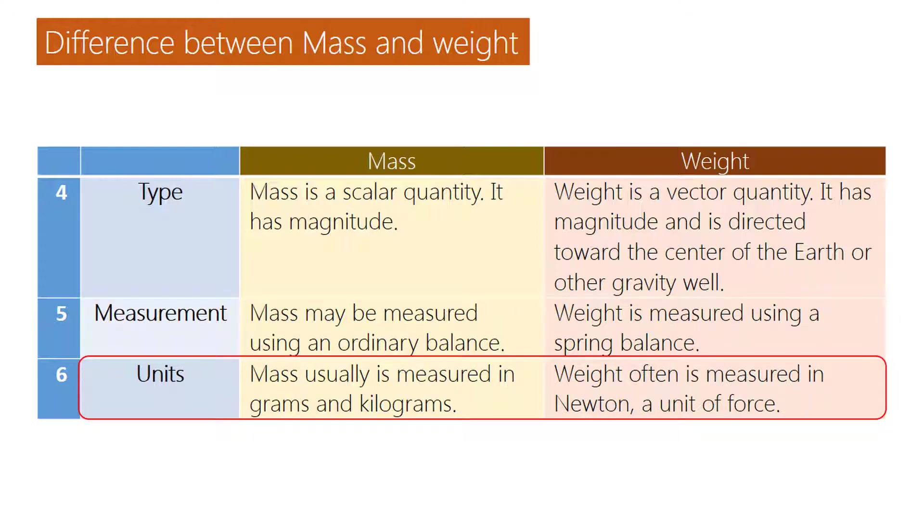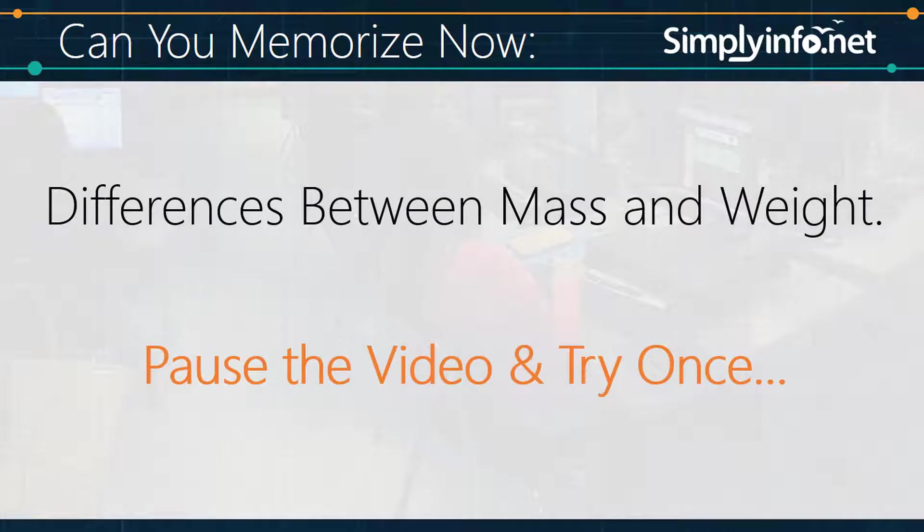Units of mass: Mass usually is measured in grams and kilograms. Units of weight: Weight often is measured in newton, a unit of force. Can you memorize now? Difference between mass and weight? Pause the video and try once.